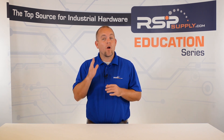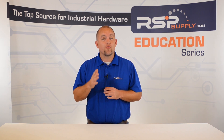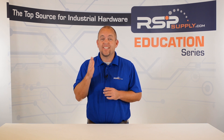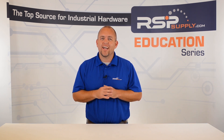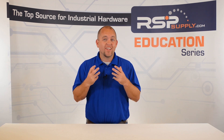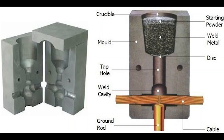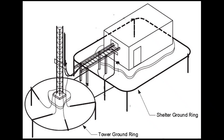It is always recommended that where the grounding electrode conductor meets the metallic tower structure, that the same special welding technique be used. This welding technique is referred to as exothermic welding. The best system to use for grounding a tower is to install a ground ring. As mentioned in some of our previous videos, a ground ring is a system of conductive grounding material that will encircle the tower.